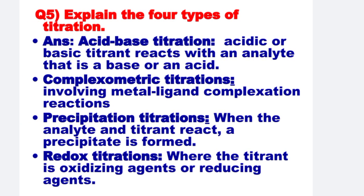Next: Explain the 4 types of titration. In acid-base titration, an acidic or basic titrant reacts with an analyte that is a base or an acid. In complexometric titration, it involves metal-ligand complexation reactions. In precipitation titration, when the analyte and titrant react, a precipitate is formed. And in redox titration, the titrant is an oxidizing agent or reducing agent.